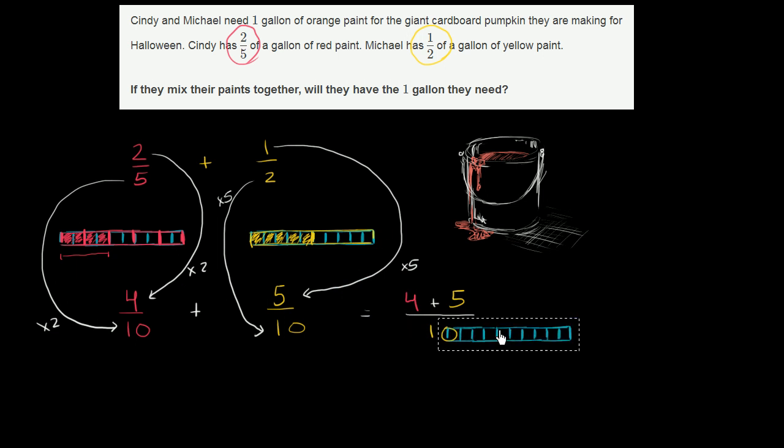Let me draw our grid again. So 4 plus 5 tenths. I'll do it actually on top of the paint can right over here. So let me color in four-tenths. So 1, 2, 3, 4. And then let me color in the five-tenths.